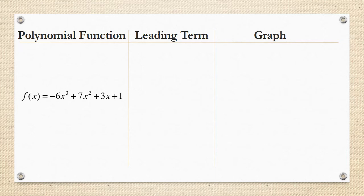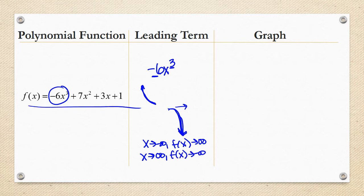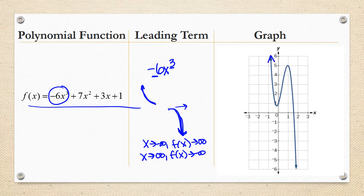More examples. f of x equals negative 6x cubed plus 7x squared plus 3x plus 1. The leading term is negative 6x cubed. This is an odd-powered function with a negative coefficient. So as our x's are approaching negative infinity, your function should be going towards positive infinity, and as our x values are approaching positive infinity, your function should be going towards negative infinity. You can see on the left-hand side it's going towards positive infinity, and on the right-hand side it's going towards negative infinity.